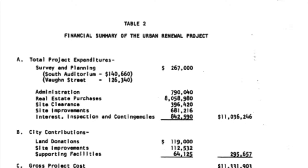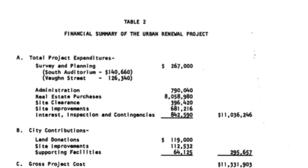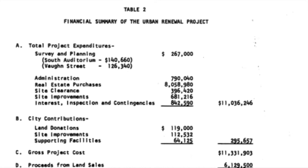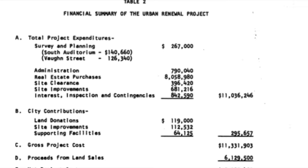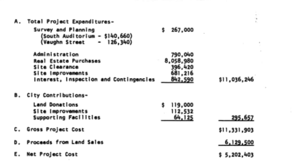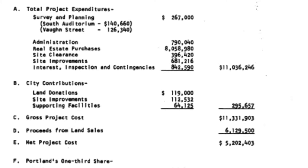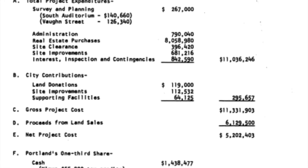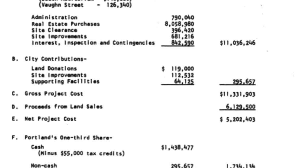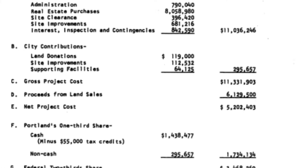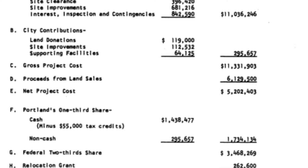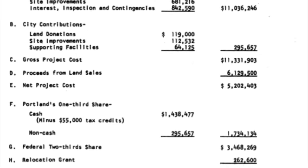The image shown is of the South Auditorium District. In 1955, the Mayor of Portland's Advisory Committee identified blocks at the southeast end of downtown Portland as suitable for a land clearance and redevelopment project. This next image is a financial summary of the urban renewal project, showing the total project expenditure cost, city contributions, gross project cost, and projected money from land sales. This document is very important to understanding how much the city planned to spend and the total cost to both the state and federal government.